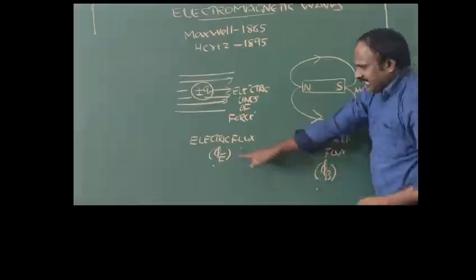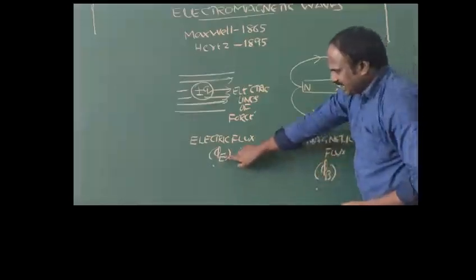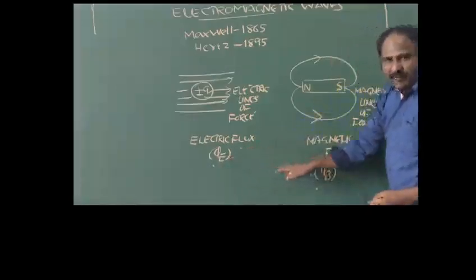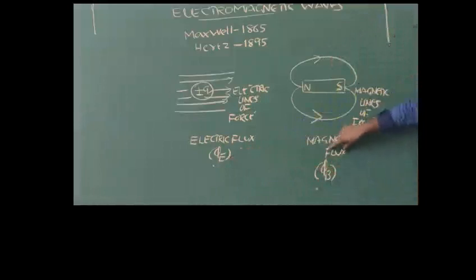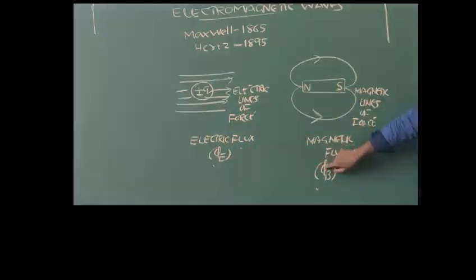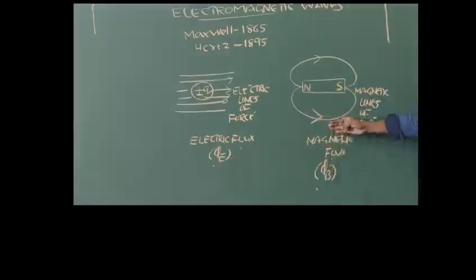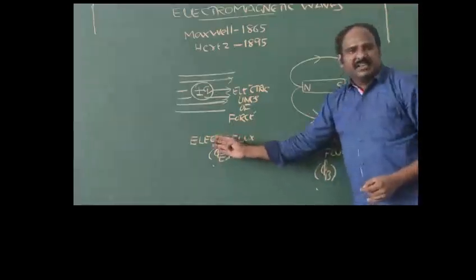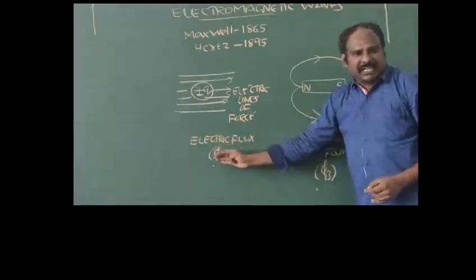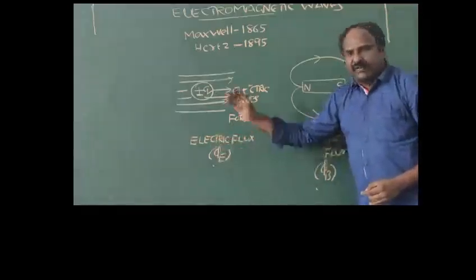B indicates magnetic field, while E indicates electric field. Flux is indicated by phi, which gives the number of lines of force. Phi gives the number of magnetic lines of force, while the other gives the number of electric lines of force.